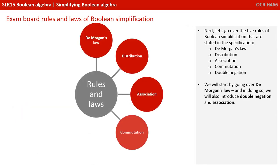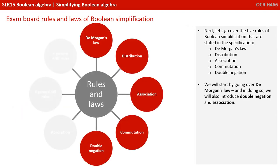Let's go over the five rules of Boolean simplification that are stated in the specification: De Morgan's law, distribution, association, commutation, and double negation. We will start by going over De Morgan's law, and in doing so, we're actually going to touch on and introduce double negation and association.